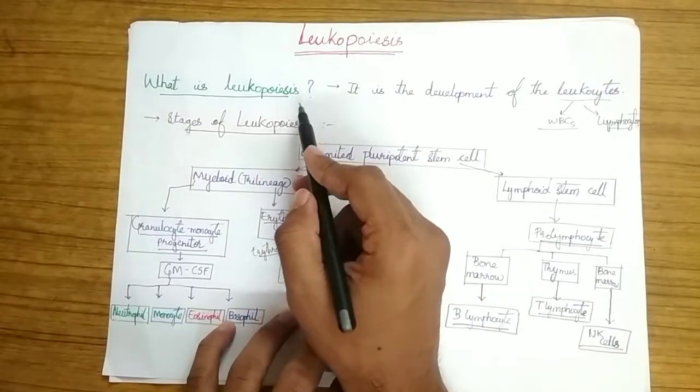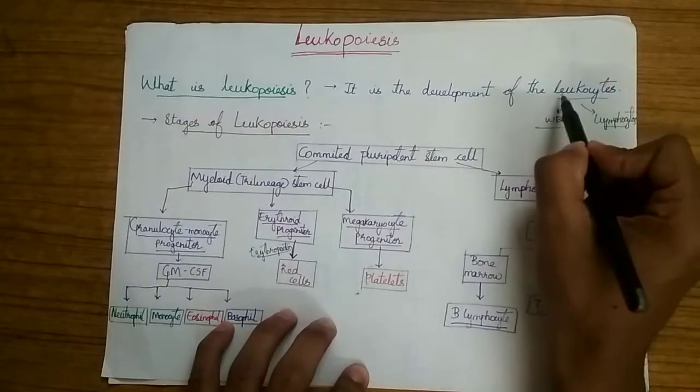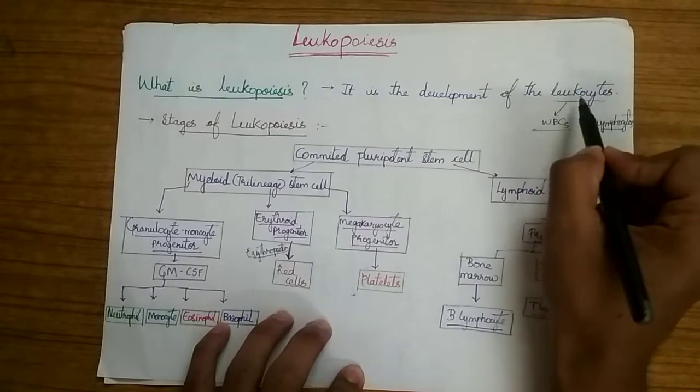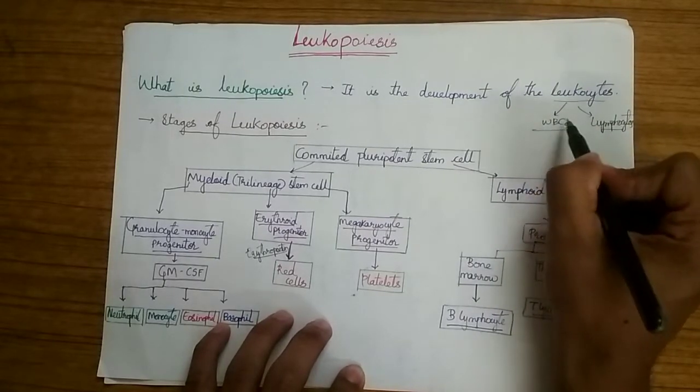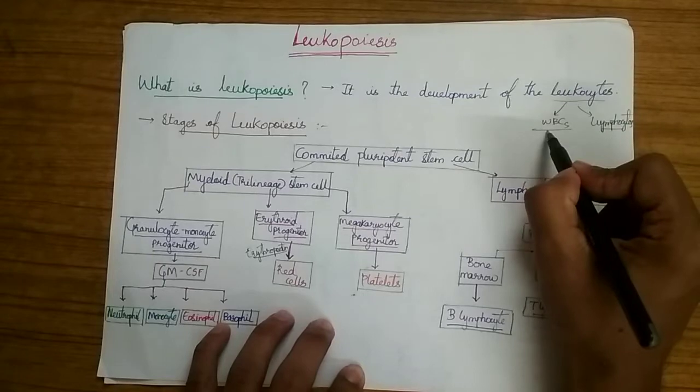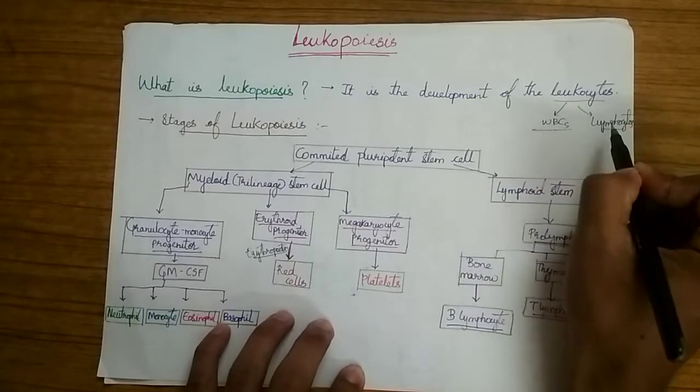What is Leukopoiesis? It is the development of the leucocytes. What are leucocytes? Leucocytes are nothing but WBCs and lymphocytes which play the main role in the immune system of our body.